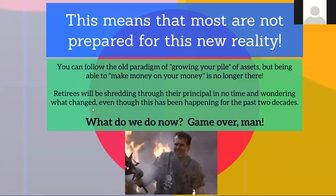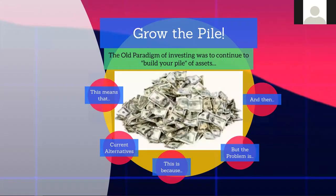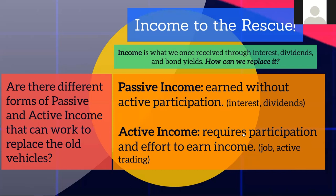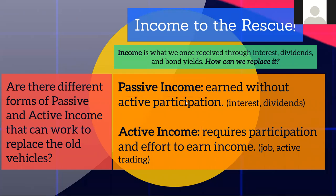A lot of people are thinking game over, but we need to be focusing on something new: income to the rescue. Income is what we once received through interest, dividends, bond yields — how can we replace it? We've got two different forms of income. Passive income is earned without active participation — interest or dividends. Active income requires participation and effort — a job or active trading will produce active income if you do it right. We'll use different tools for both.